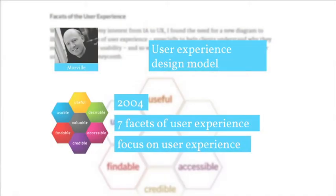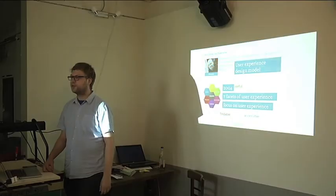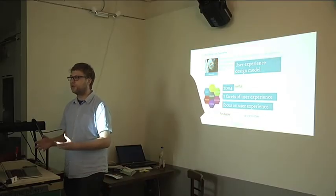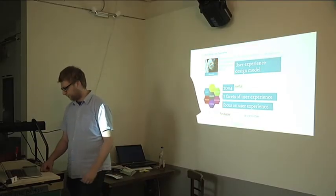They are not in chronological order, but the next one that I rediscovered was Peter Morville. In 2004, he described seven facets of user experience: findability, accessibility, usefulness, and so on. You can see them in the honeycomb construction. It's really one of the first user experience design models, and it's often cited within almost every agency throughout the world when it's about user experience.